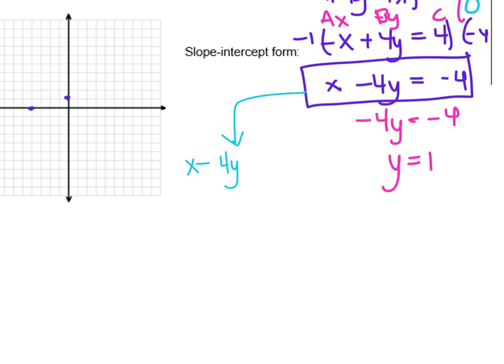So x minus 4y equals negative 4. Always get the x to the other side first. So we subtract x, leaves us with negative 4y equals negative x minus 4. Divide everything by that negative 4.